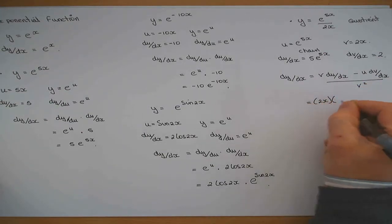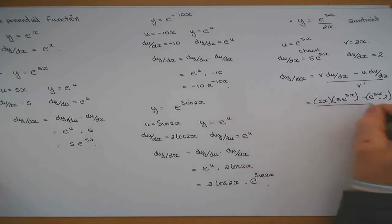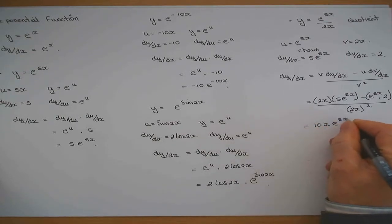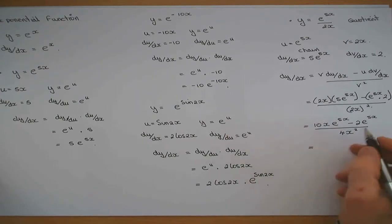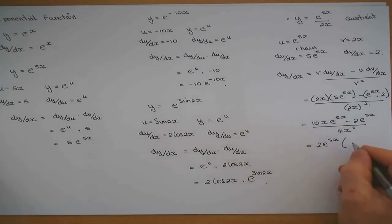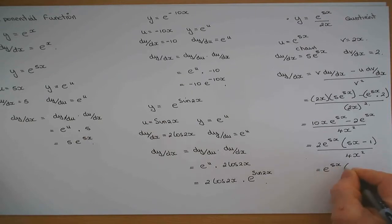So that's 2x times 5e to the 5x minus e to the 5x times 2, all over (2x) squared. That gives 10x times e to the 5x minus 2e to the 5x all over 4x squared. Factorising the top, take out e to the 5x and 2, giving 2e to the 5x times (5x minus 1) all over 4x squared. The 2 divides into 4 as a factor, leaving e to the 5x times (5x minus 1) all over 2x squared.